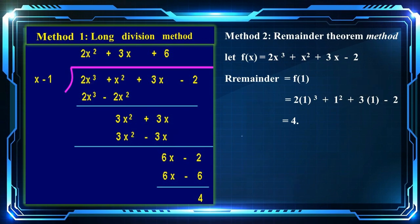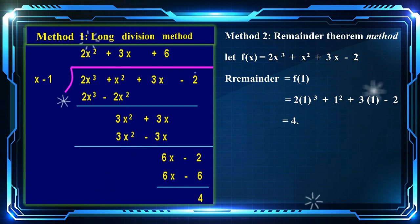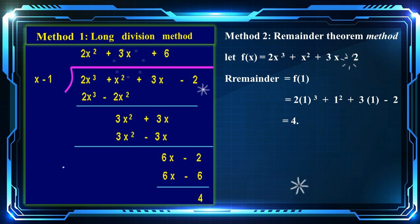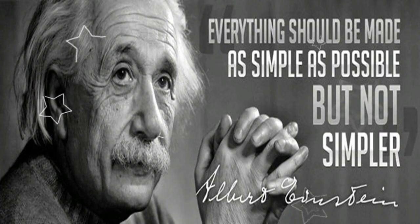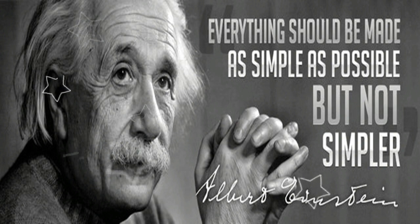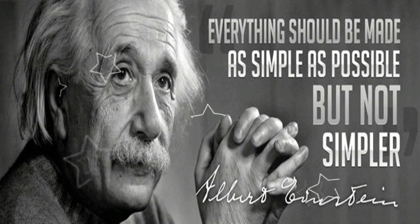Let's look at another example. In algebra, there are two ways to find the remainder, as shown in the figure. Method 1 uses long division, and method 2 uses the remainder theorem. The remainder theorem is simpler than long division, and therefore is included in the global mathematics curriculum. The purpose of the sine rule, Peter Chu rule, and method is the same as Albert Einstein's famous quote: 'Everything should be made as simple as possible, but not simpler.'